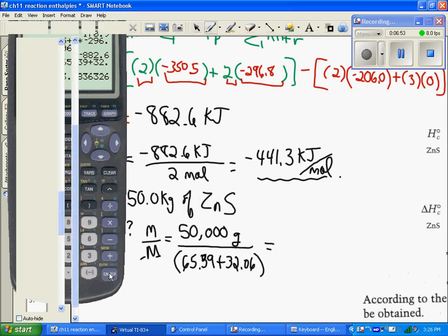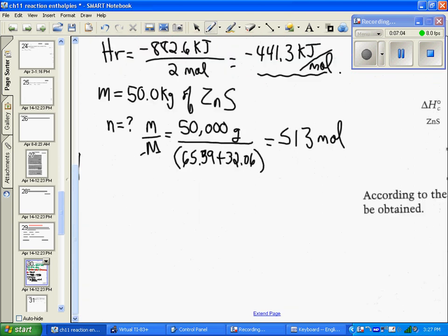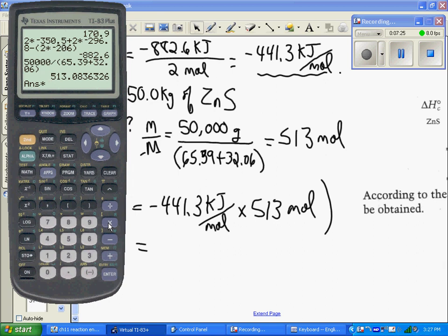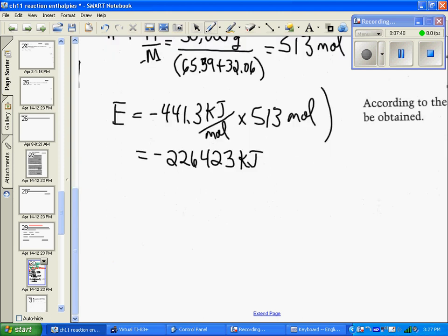So how much energy are you going to get from burning 50 kilograms? That's a lot, folks, right? So you're going to take your total energy is going to be negative 441.3 kilojoules per mole burned times a whopping 513 moles. And that will give us the multiplier answer by 441.3. And it's now negative, and you have 226,423 kilojoules. Well, once you deal with a large number like that, we can convert it down to, divide it by 1,000 and say that you get 226 megajoules of energy produced from roasting 50 kilograms of that ore.